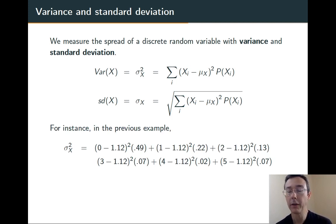So, here's the computation. It gets a little hairy. Usually, you don't want to do this by hand. Again, the values of our variable were 0, 1, 2, 3, 4, 5, and 6. The expected value was 1.12.